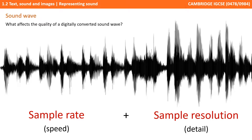Before we have a look in detail, let's consider what actually affects the quality of a digitally converted sound wave. There are two main factors: the sample rate and the sample resolution.